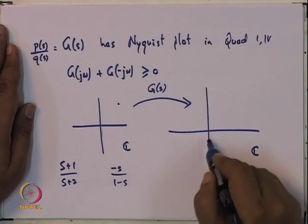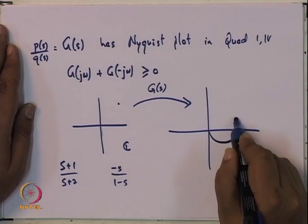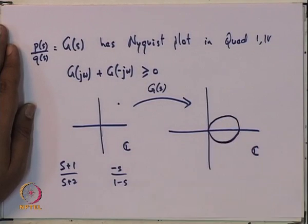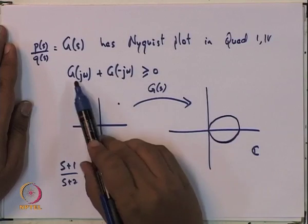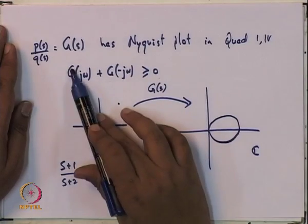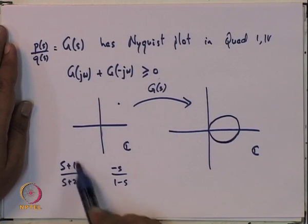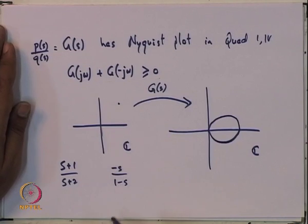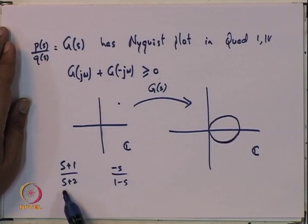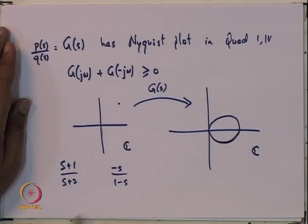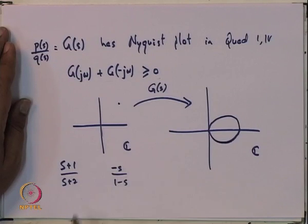In this particular case it will map to something like that in the right half. Now if the positive realness definition is just taken to be this Nyquist condition, then both (s+1)/(s+2) and an unstable counterpart would turn out to be positive real. But if you take the state space representation and try to use the positive real lemma, the lemma will be applicable only to the stable one, because for the other the denominator has its roots in the right half plane, not the left.